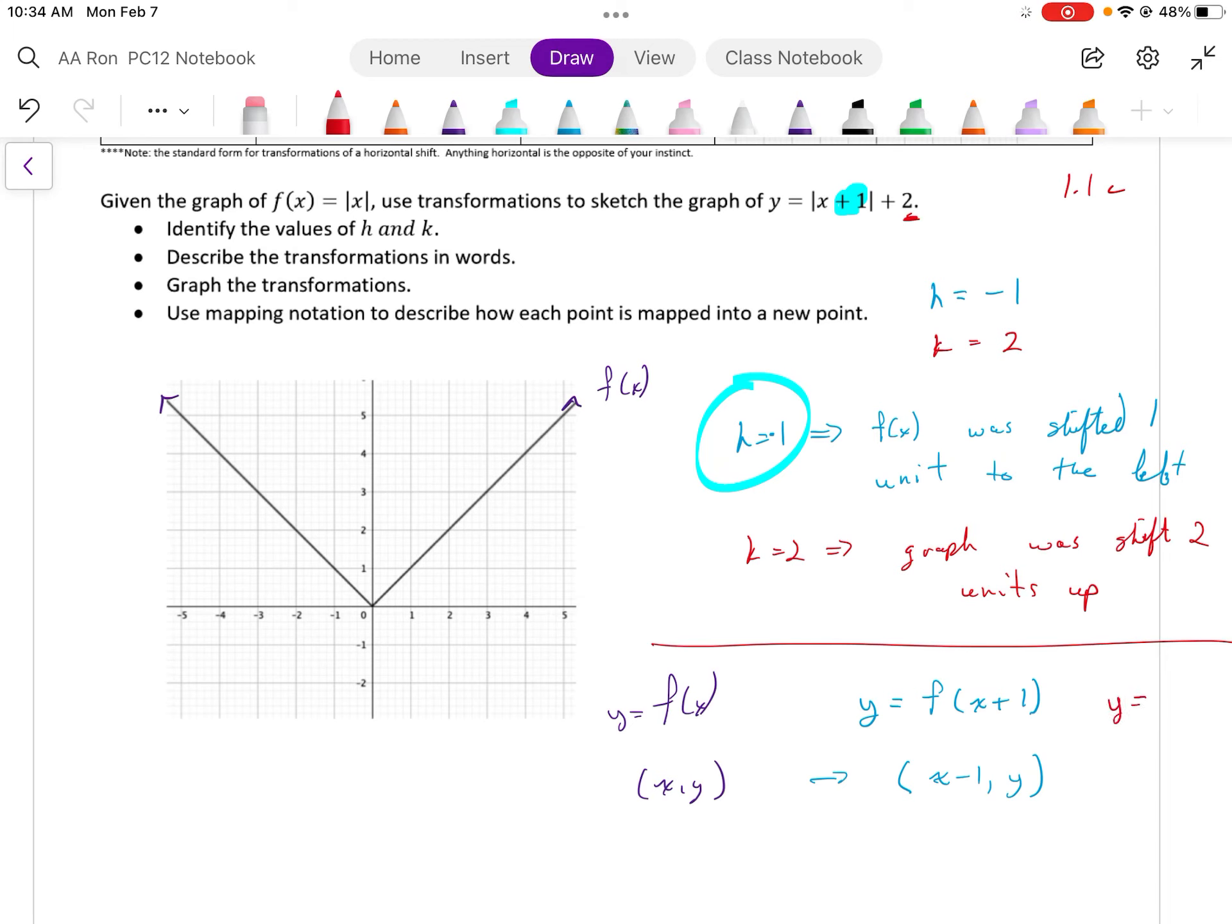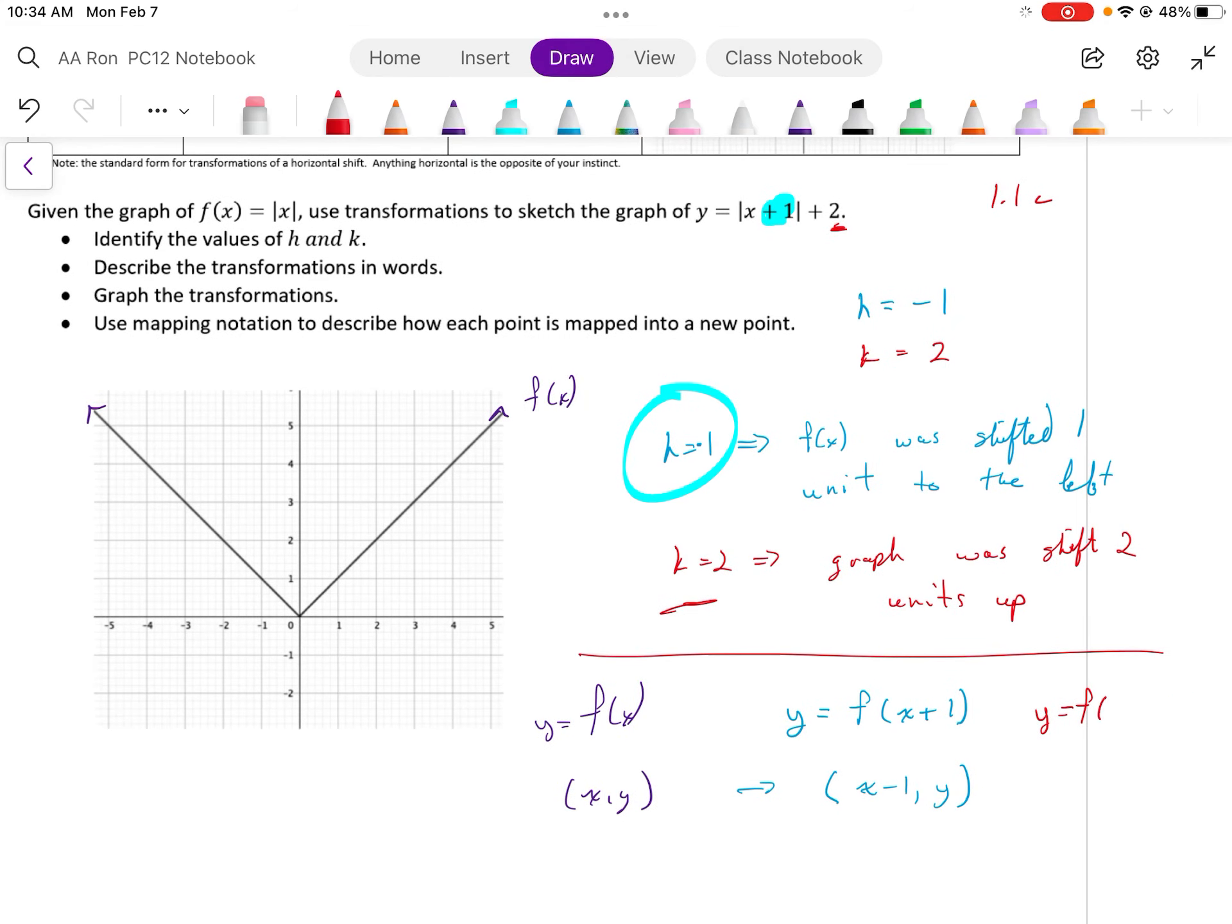And finally, y is equal to, now I need to look at my k. So I need to add 2 to my function. So y equals f(x plus 1) plus 2. So what happens to my point? My point x minus 1, y would transform to x minus 1. The x value stays the same, and then I just simply add 2.